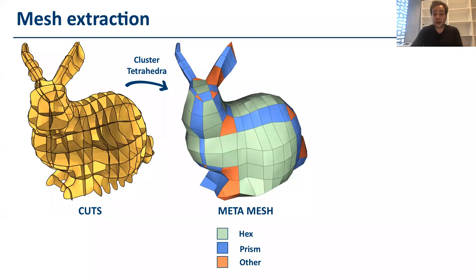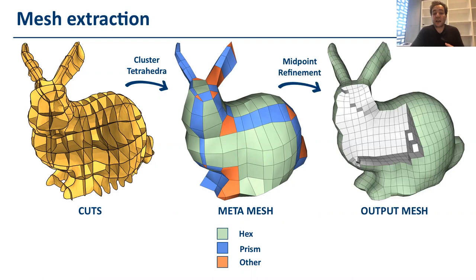And these clusters, they might be already hex or prism or other elements. And at the end, we actually obtain the hex dominant meshing using a midpoint refinement step.